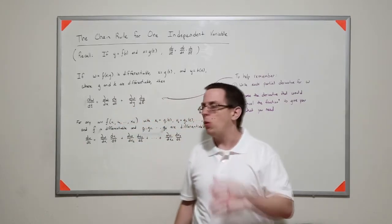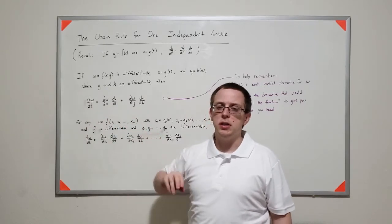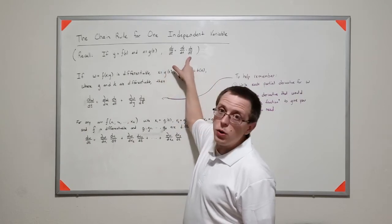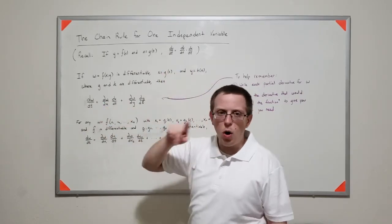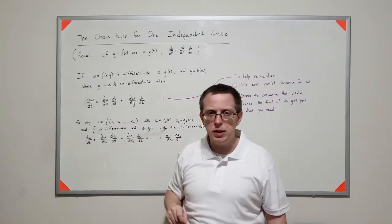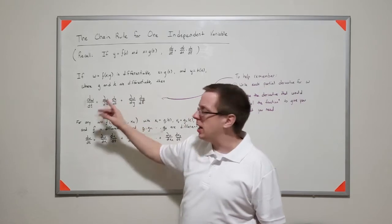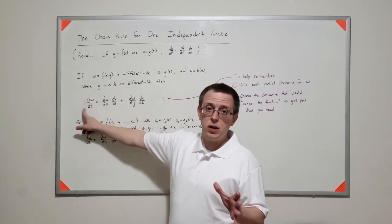So the first thing I want to point out here is, notice how the script is the same. We have, the script here, the script here matches the way we normally write derivatives. But the script here is that partial, that curved d. And the reason that is, is because this is a derivative with respect to a single variable.